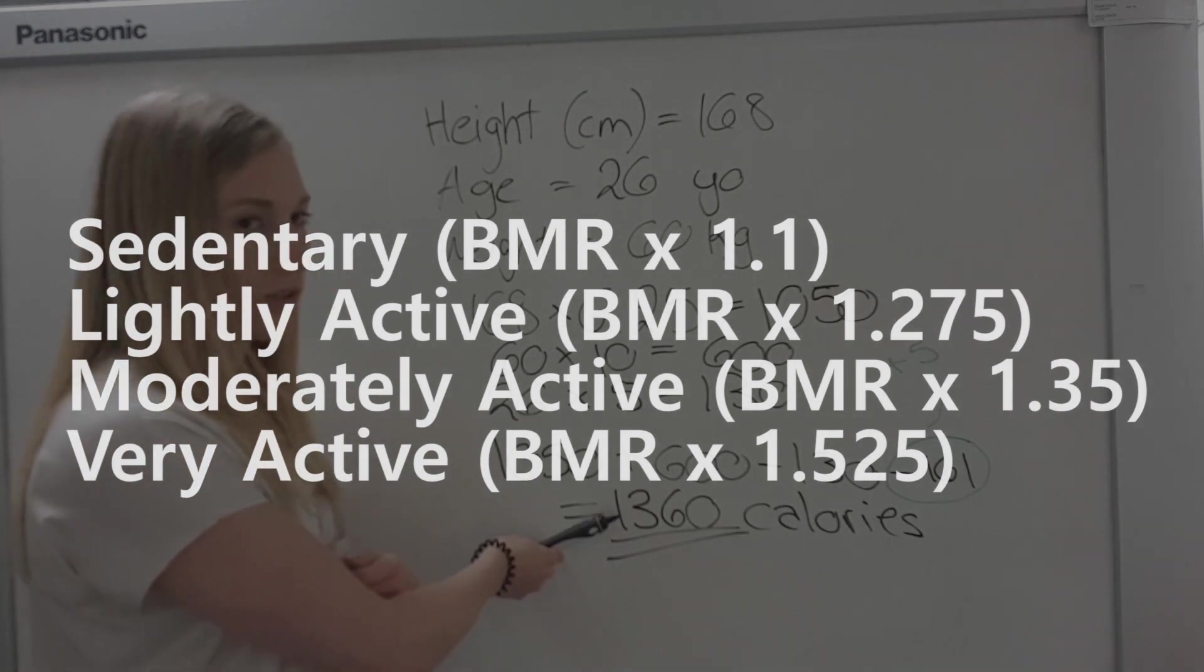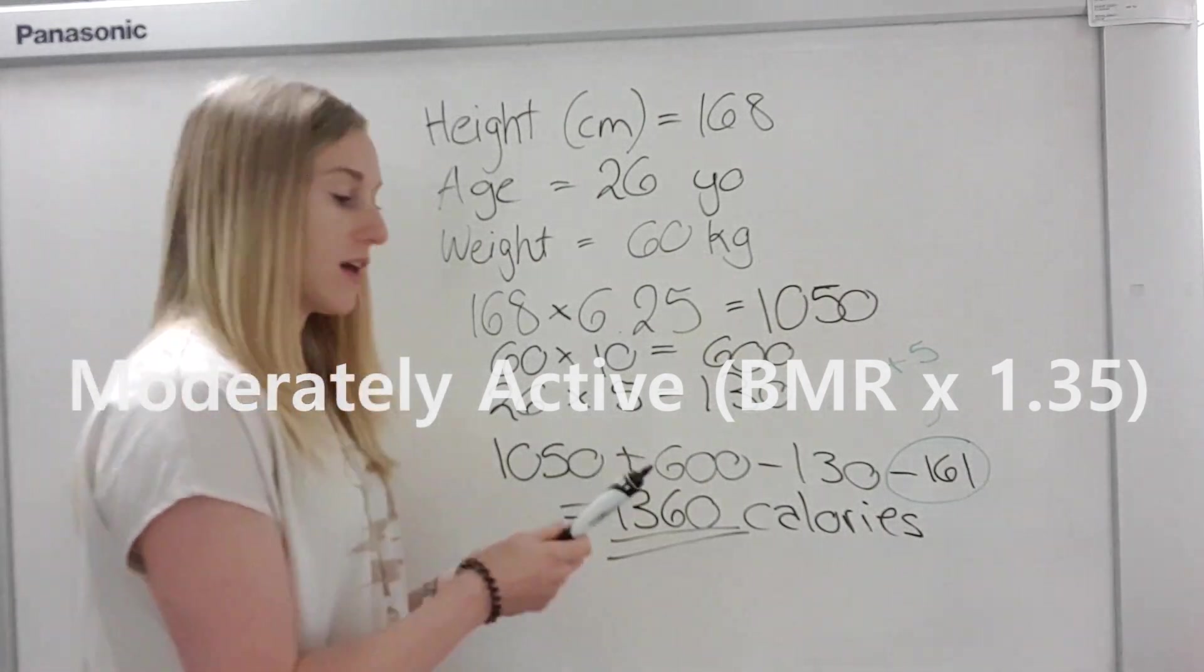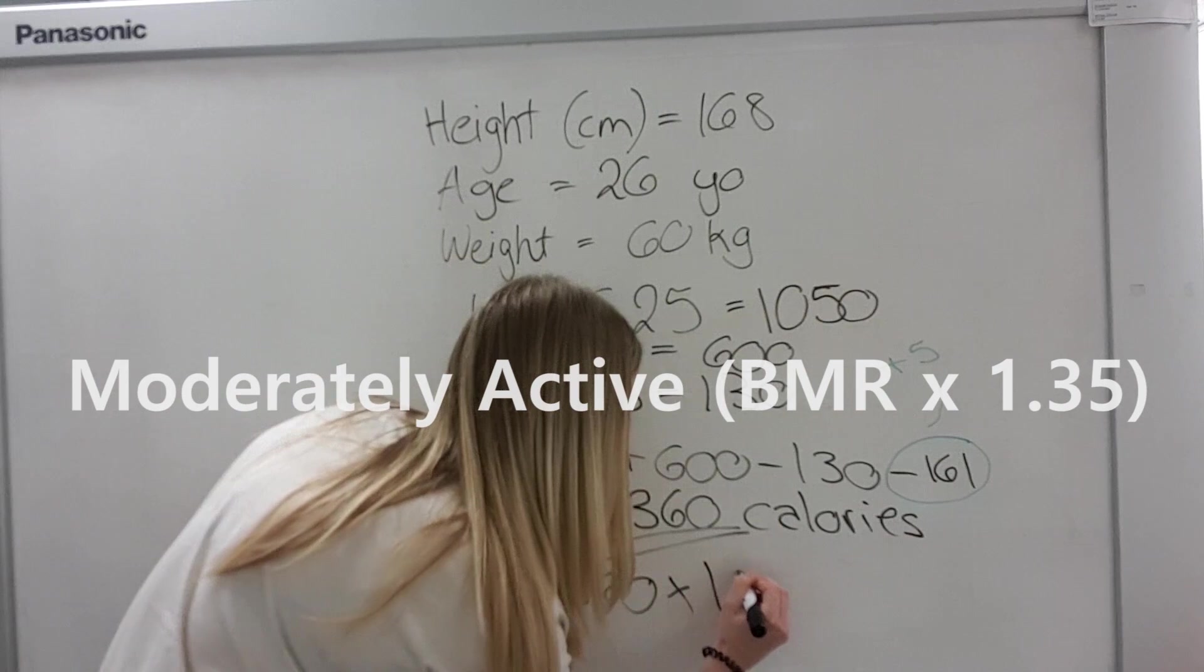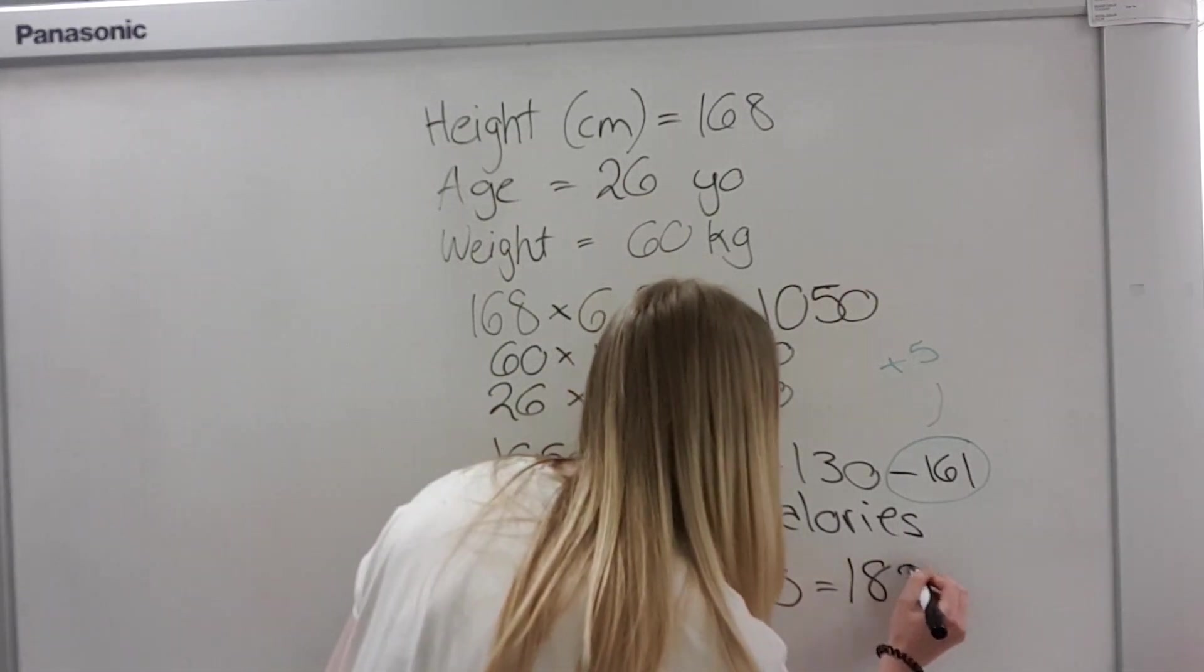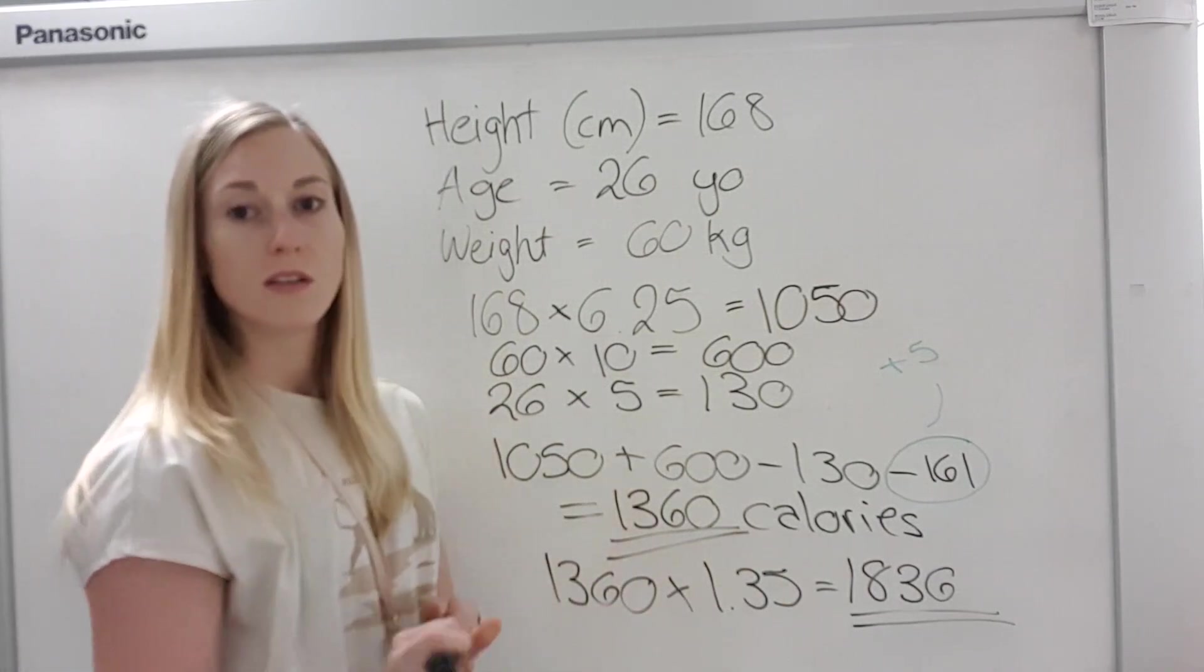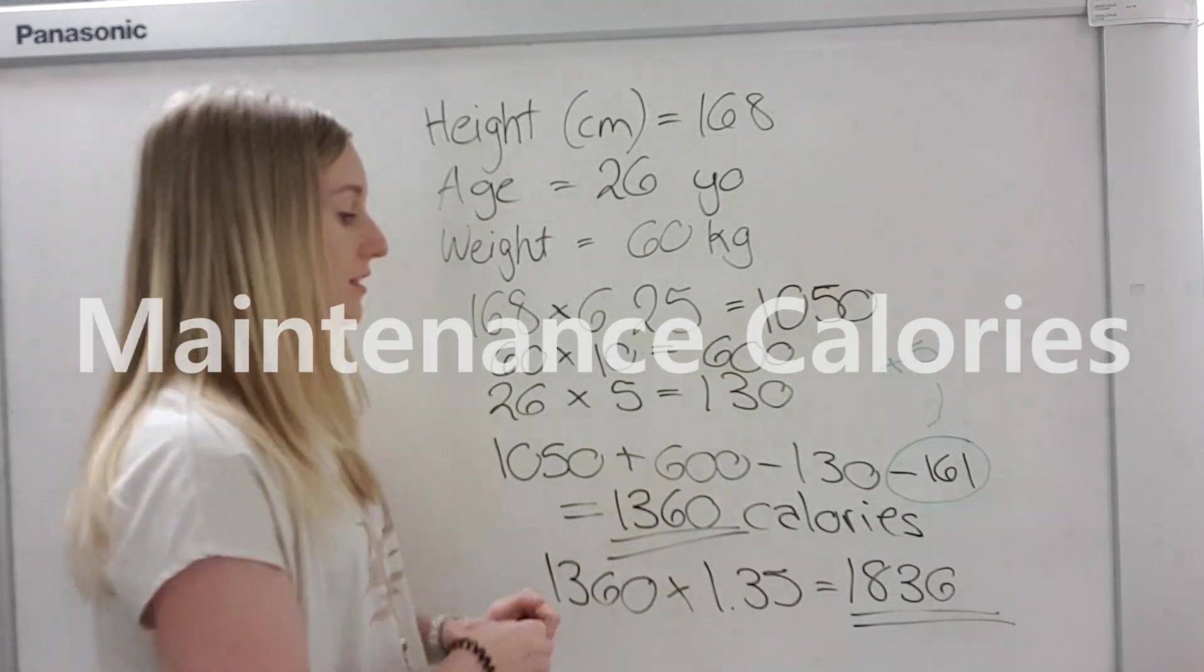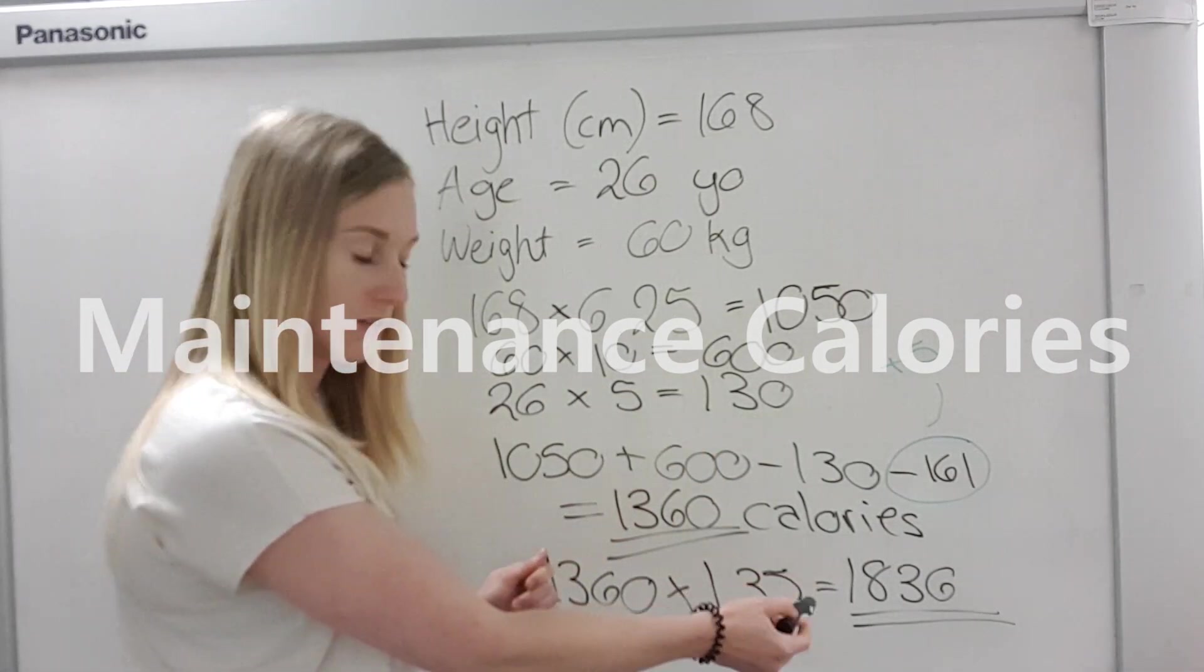But for myself, so I used 1360, I'm going to use the moderate activity level, which means I'm going to do BMR times 1.35. So I'm doing 1360 times 1.35. And that gives me a total of 1836 calories. So this is the calorie level I would need if I want to stay at the same weight that I'm at. So if I want to not gain weight, not lose weight, I just want to maintain my weight, this is the amount of calories I would eat to maintain that weight. Okay, so that's the amount of calories.